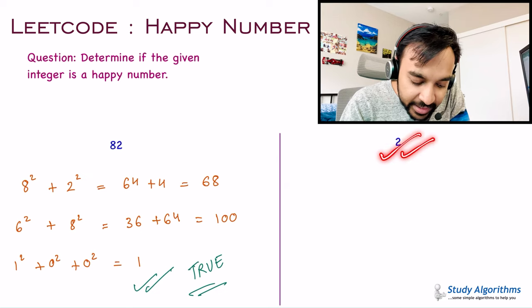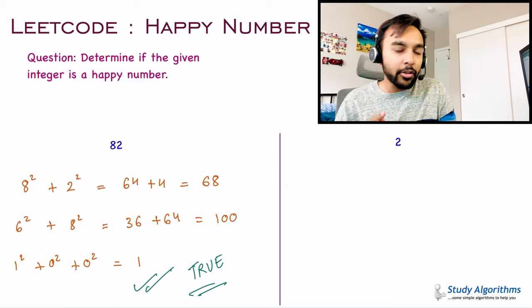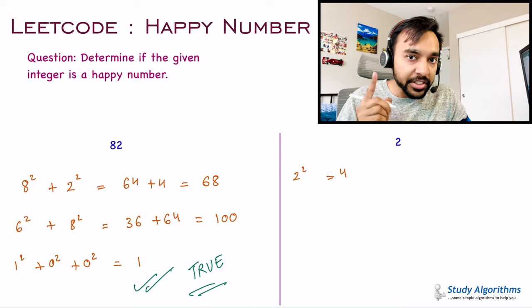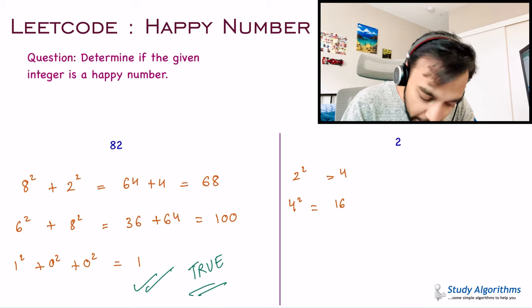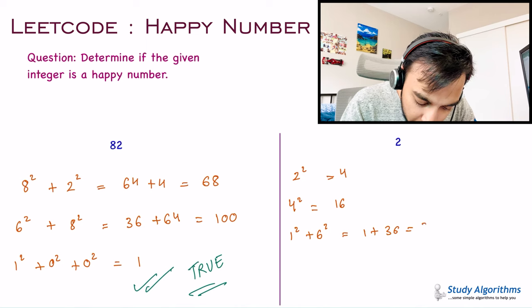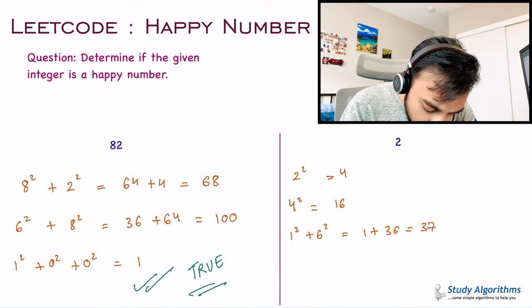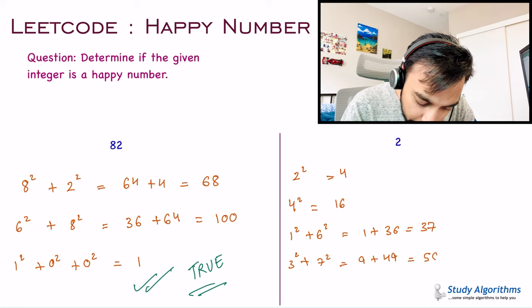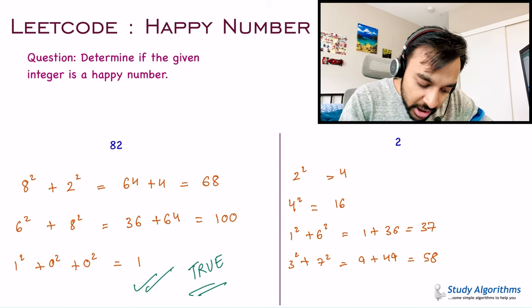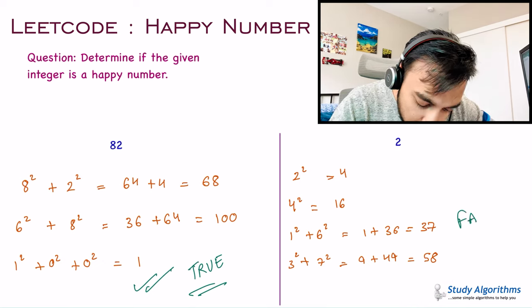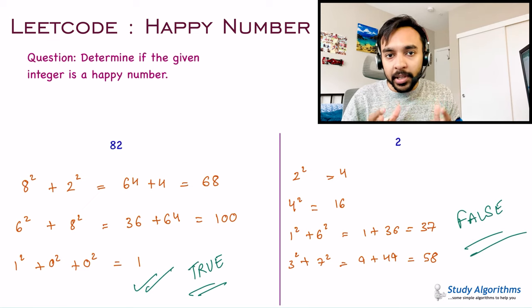Similarly, let us look at our second test case: the integer 2. It is not the case that you stop at a single digit — you still have 2, so 2² is 4. But you don't stop here since you haven't received a 1. 4² is 16. Moving on, 1² plus 6² is 1 plus 36, giving you 37. You keep doing this: 3² plus 7² is 9 plus 49, giving you 58. For this particular test case, if you keep doing this again and again, you will never reach 1. So you return false. If the problem statement is clear, feel free to try it on your own; otherwise, let us dive into the solution.